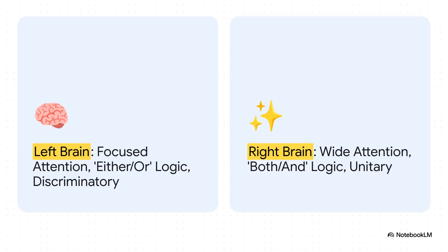The right brain, on the other hand, is a bit more chill. It's got that wider, both-and perspective. It can see the whole picture. But for most of us, most of the time, it's that divisive left brain that's running the show.